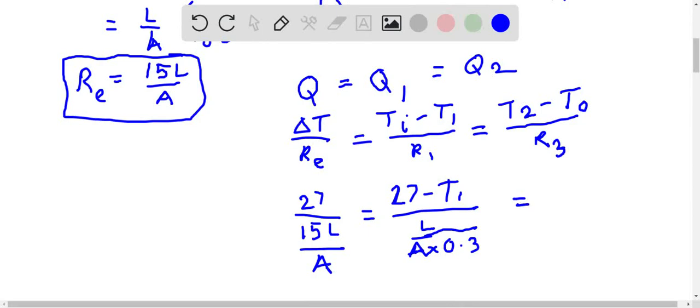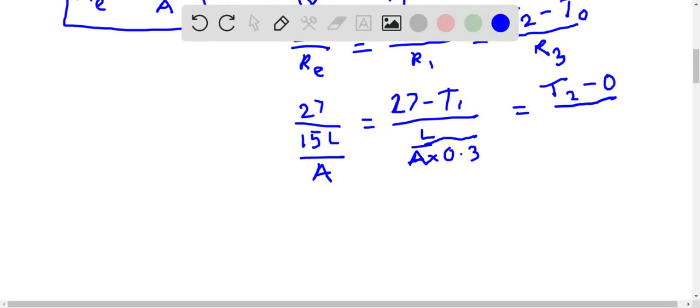Here we have T2, we don't know T2. We need to calculate the interface temperature T2. T2 minus T0 will be 0 by R3. R3 will be L/A times 0.1. We will take first this expression.